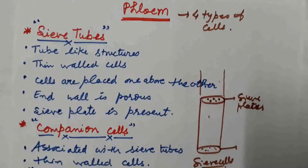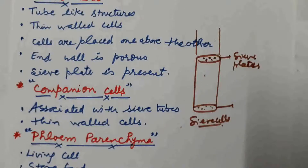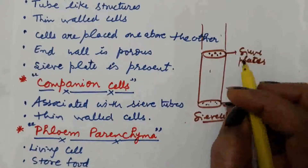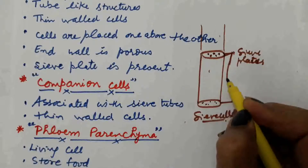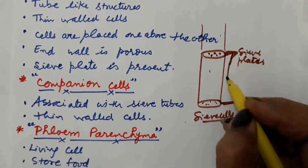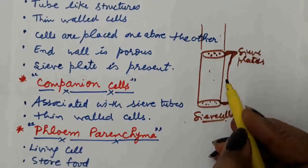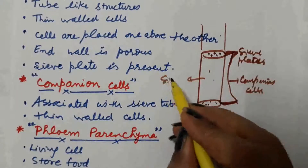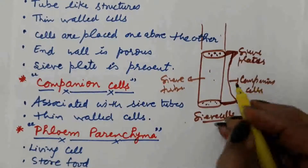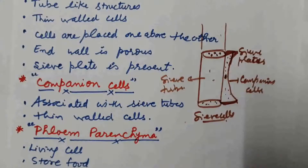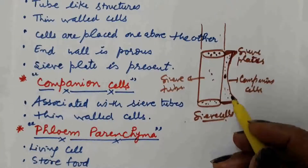Another type of cell is the companion cells. Companion cells are associated with and attached to the sieve tubes. The nucleus is present in the companion cells, but nucleus is not present in the sieve tube cells. The nucleus of the companion cells controls the activity of the sieve tubes. Companion cells are also thin-walled cells.